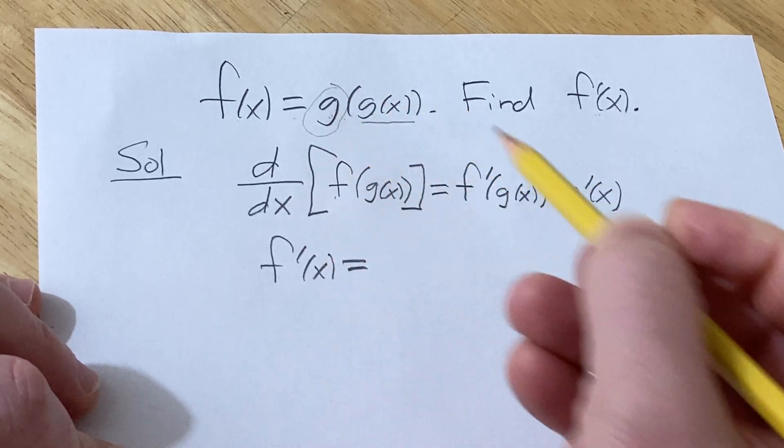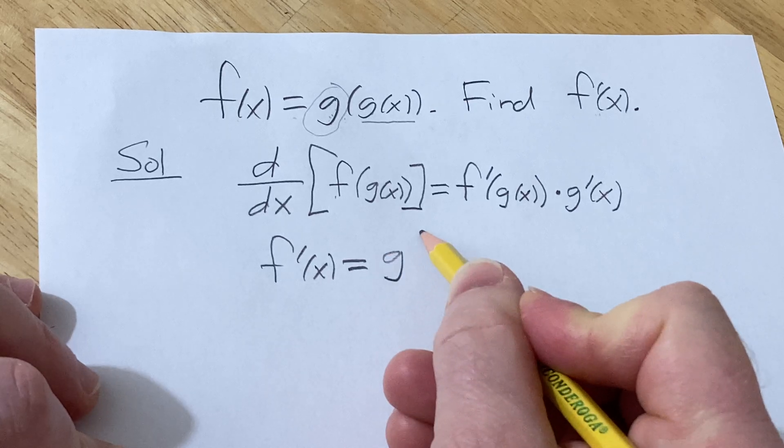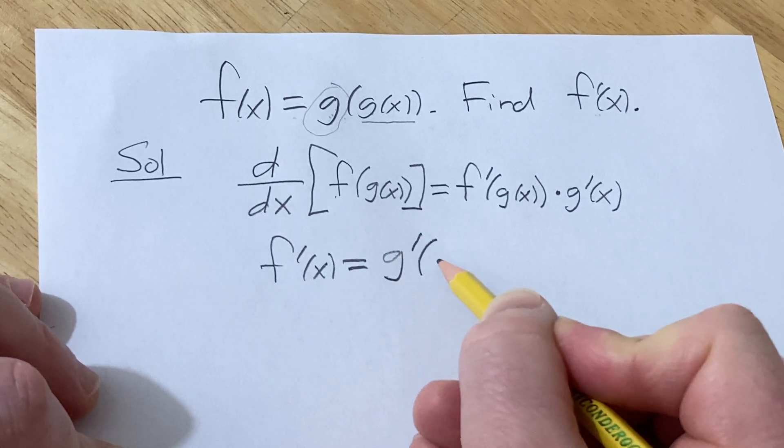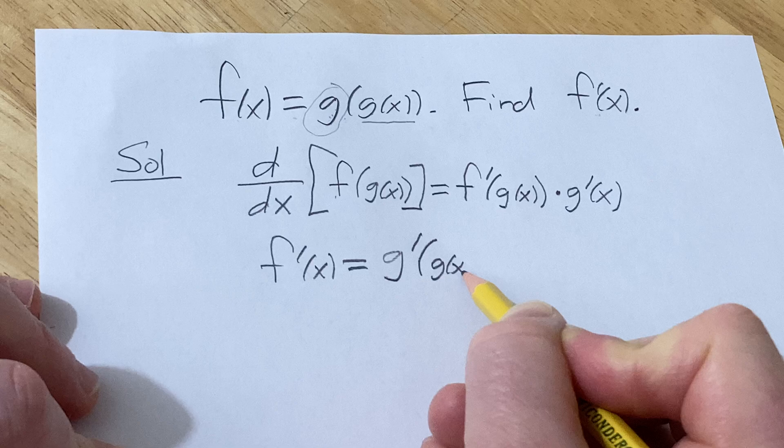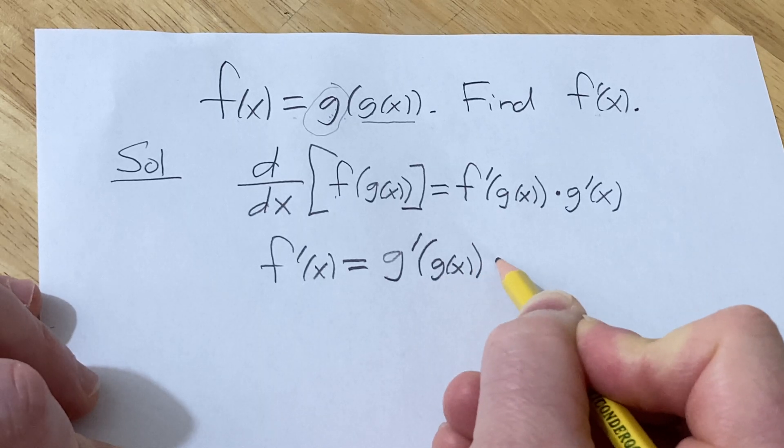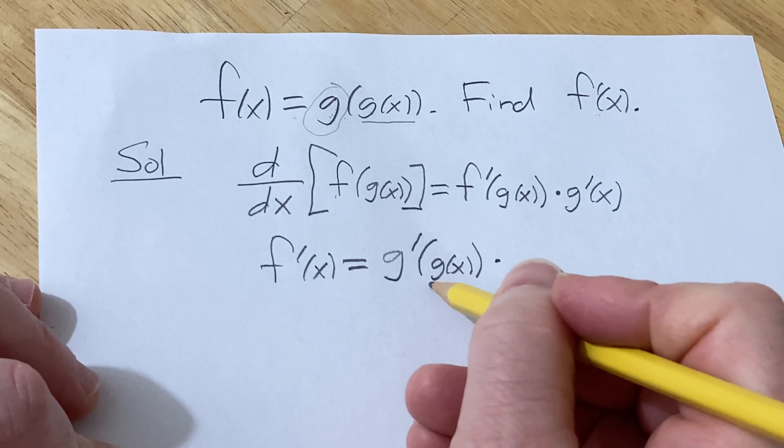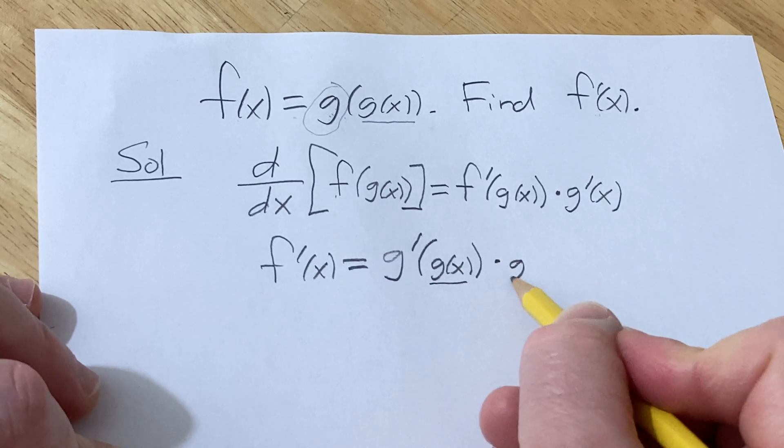So we take the derivative of the outside, g prime, and then you evaluate it at the inside. So g of x times, and now you multiply by the derivative of the inside which is simply g prime of x.